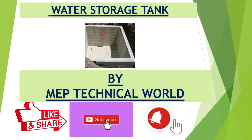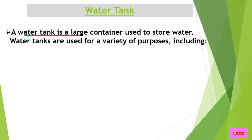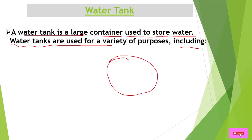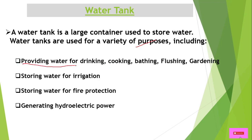So what is a water tank? A water tank is a large container used to store water. Water tanks are used for a variety of purposes including domestic uses, flushing, drinking, cooking, bathing, flushing, and gardening.